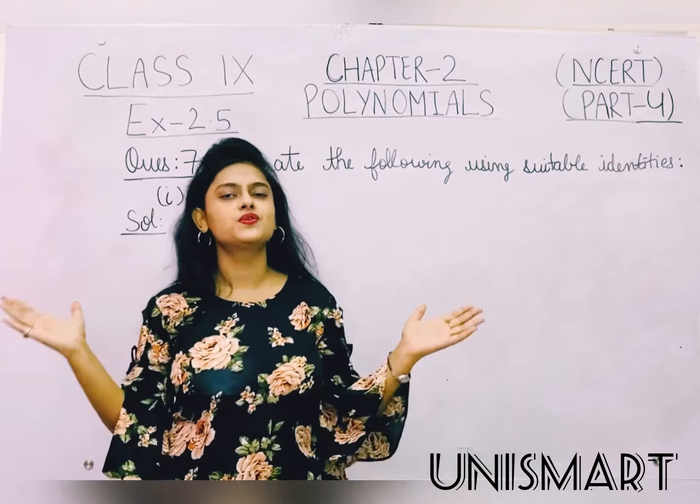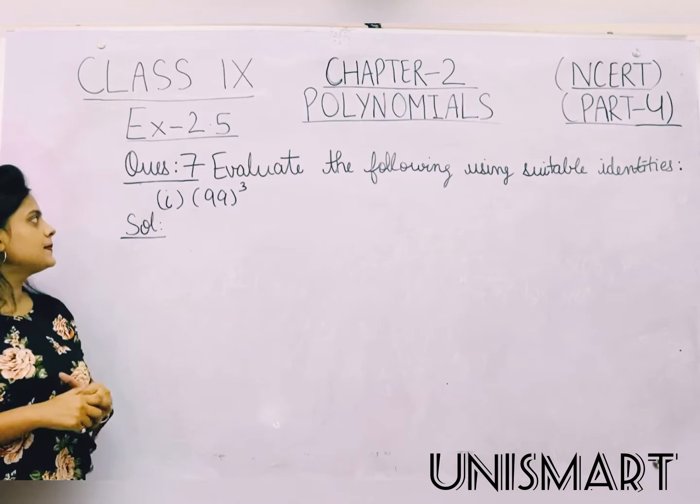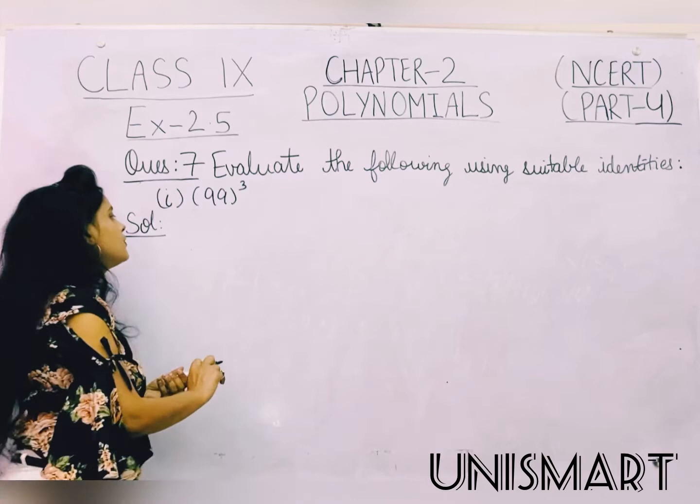Starting question number 7: evaluate the following using suitable identities — we have to apply the identities. The first part is 99 cube. So 99 cube we can write as (100 minus 1) whole cube.